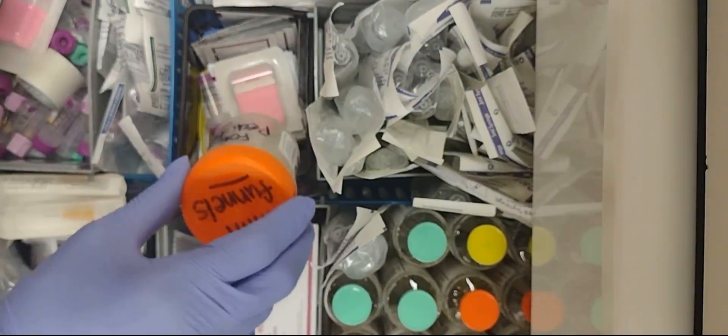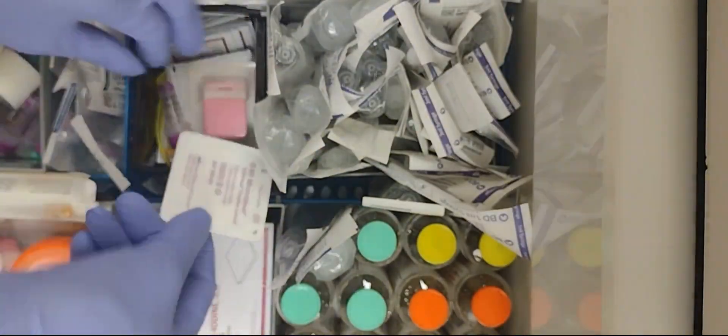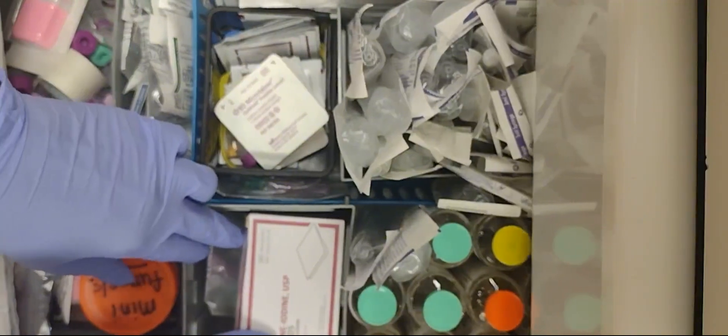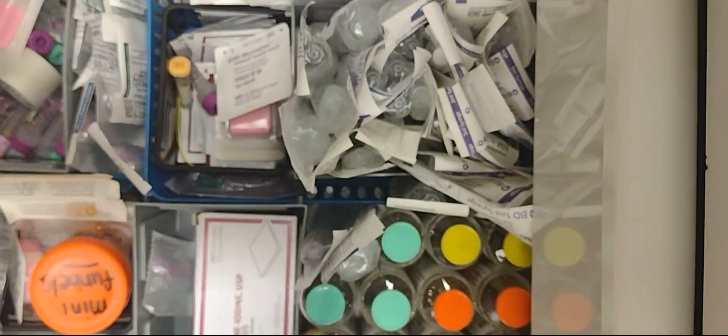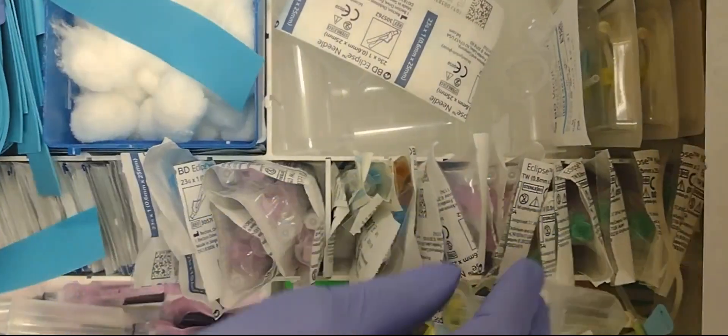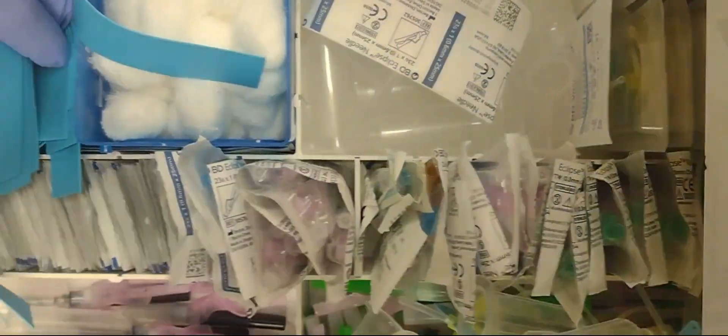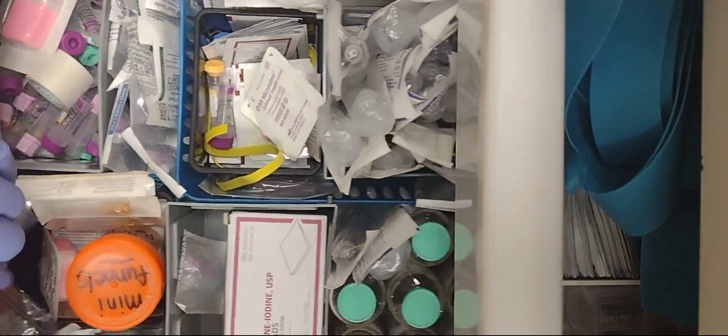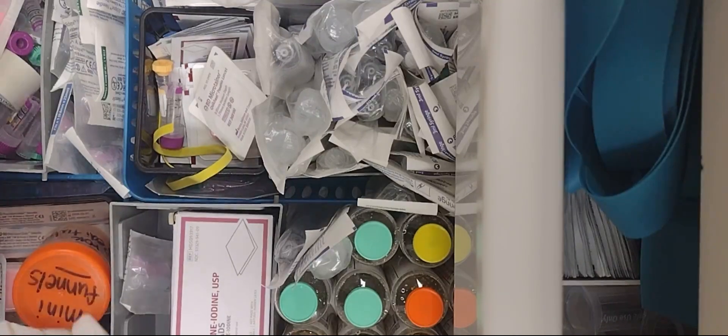These are for heel sticks on babies. We also have this one as well. These are povidone iodine pads. We use these if someone is allergic to alcohol. These are the small tourniquets for babies. In some circumstances, they will draw blood from the baby's vein, which is difficult to do. I haven't done that before yet, but in the medical field it's possible. I wanted to show y'all the regular finger stick lances. Those are heel stick lances.